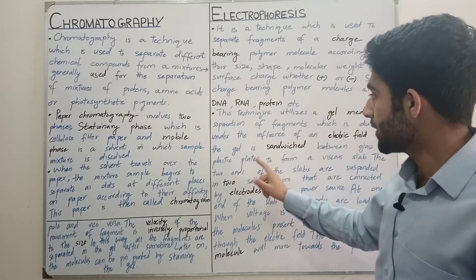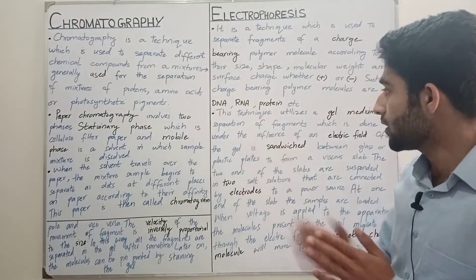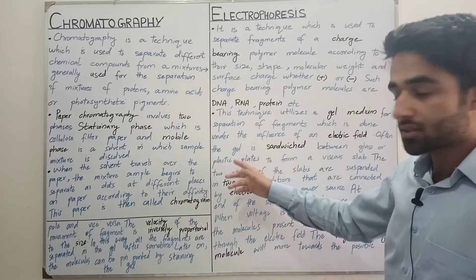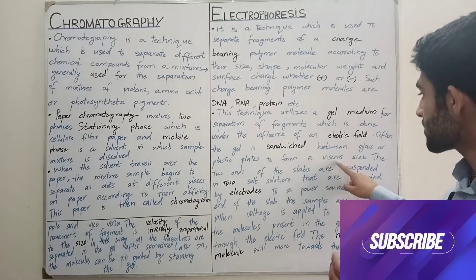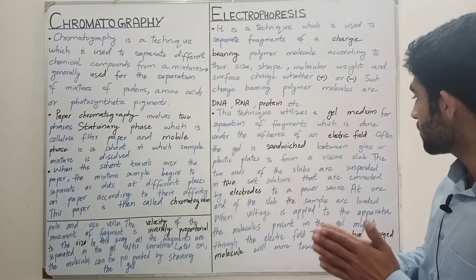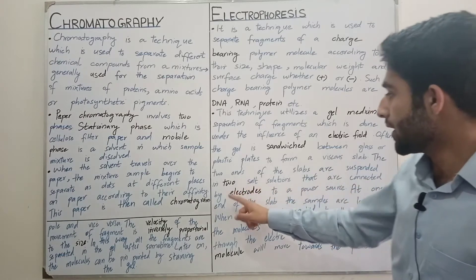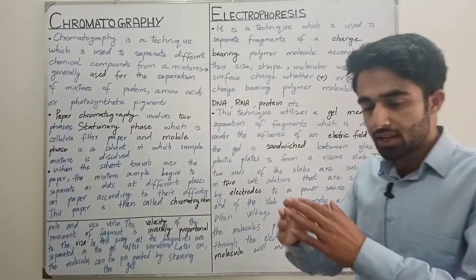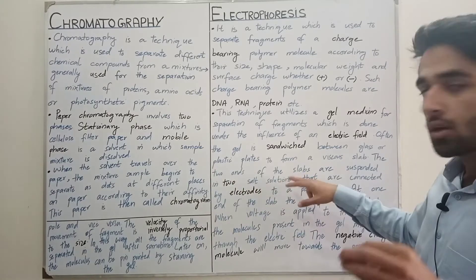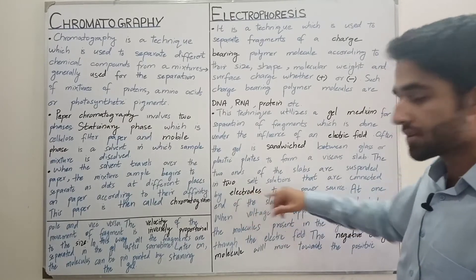Often the gel is sandwiched between glass or plastic plates to form a viscous slab. Gel ko hum glass ya plastic plates ke between rakhte hain taake ek viscous slab bane. The two ends of the slab are suspended into two salt solutions that are connected by electrodes to a power source. Jo slab hai jis mein hamari gel present hai, usko hum connect karte hain 2 salt solutions se, aur jo 2 salt solutions hain woh electrodes ke zariye power source ke saath connected hote hain.